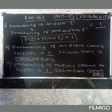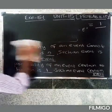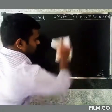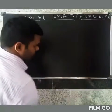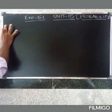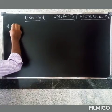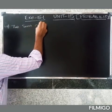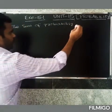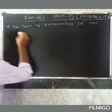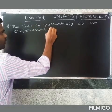Fourth question: What is the sum of the probabilities of all elementary events of an experiment? The total sum of probabilities of all events in an experiment is 1.